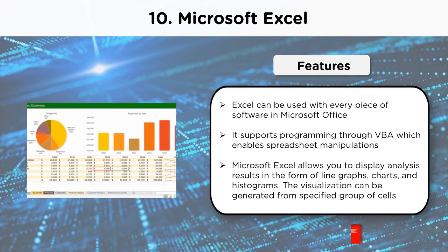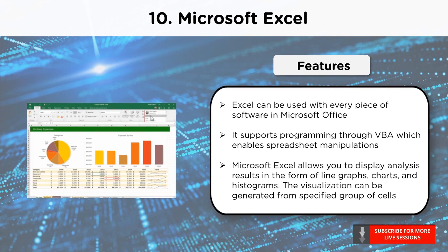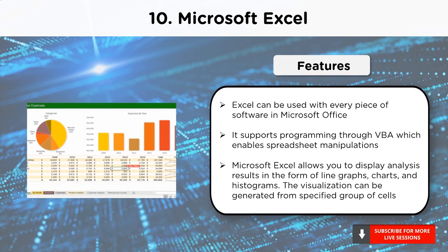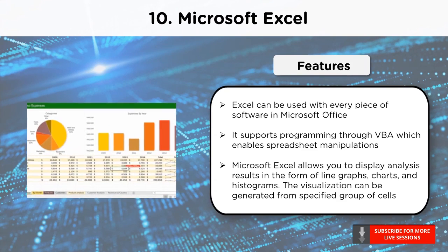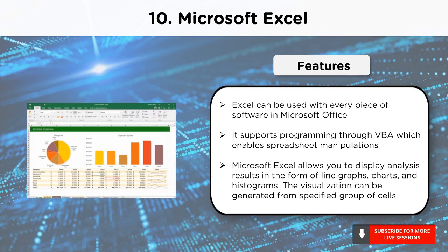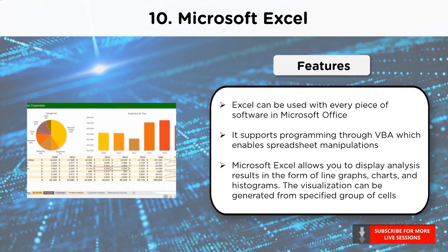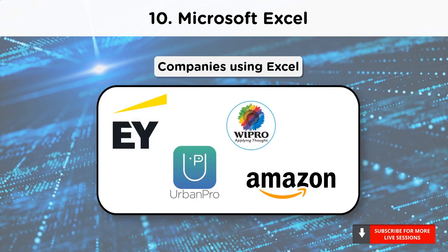By doing so, it is a lot easier to analyze data, especially while creating graphs and other visual data representations. The visualization can be generated from a specified group of cells. Those were a few of the features of Microsoft Excel. Let's now have a look at the companies using it. Most of the organizations today use Excel. A few of them that use it for analysis are the UK-based company Ernest & Young, then we have Urban Pro, Wipro and Amazon.